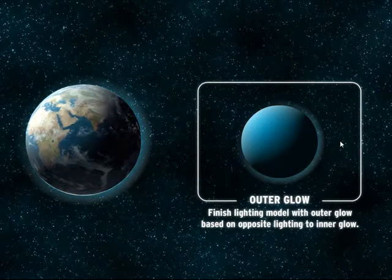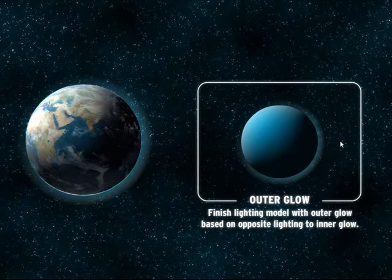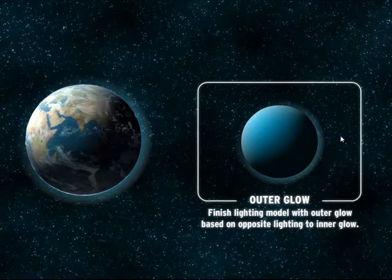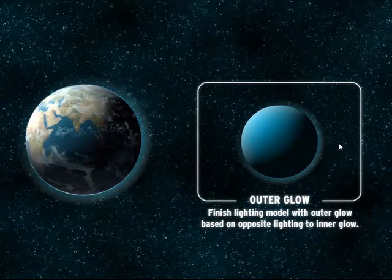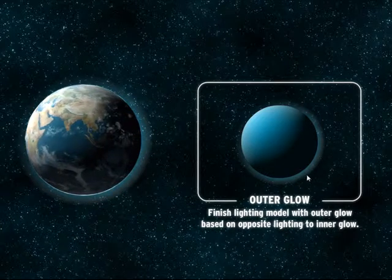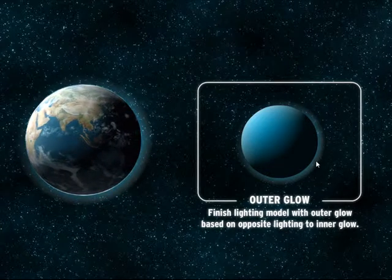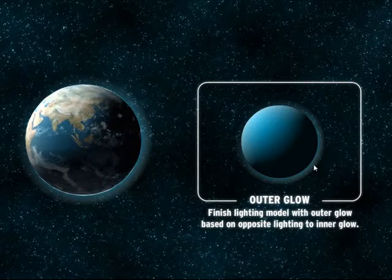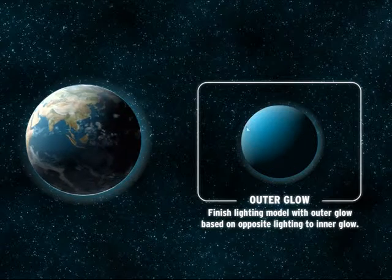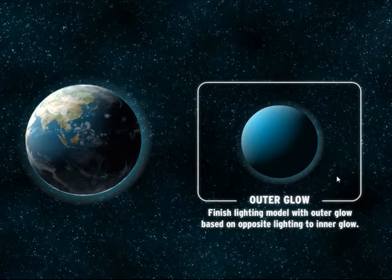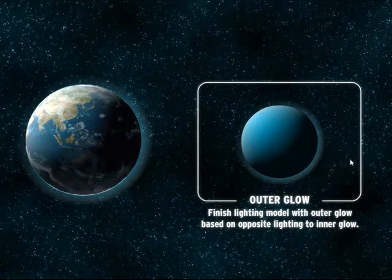Finally, we do an outer glow and fade it based on opposite lighting to the inner glow. You're only going to see the outer glow on the dark side, as if the light is coming from behind and hitting the atmosphere — you won't really see it on the light side of the planet.